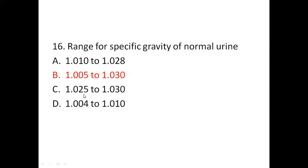Sixteenth question: what is the range for specific gravity of normal urine? Options are 1.010 to 1.028, 1.005 to 1.030, 1.025 to 1.030, or 1.004 to 1.010. The right answer is 1.005 to 1.030.